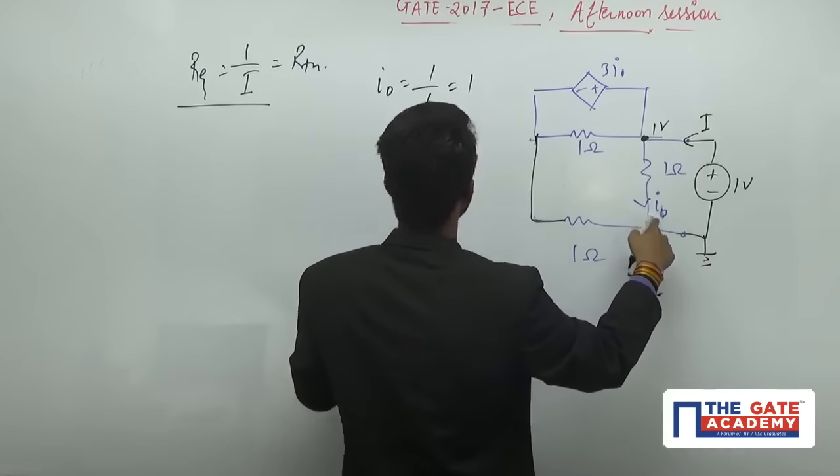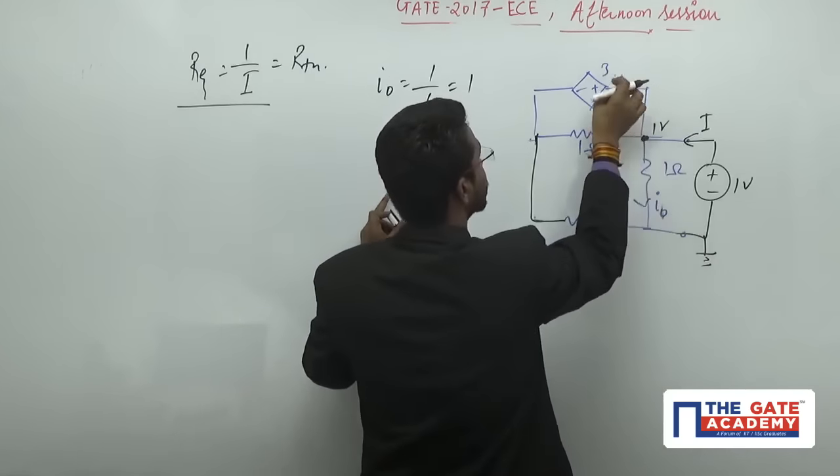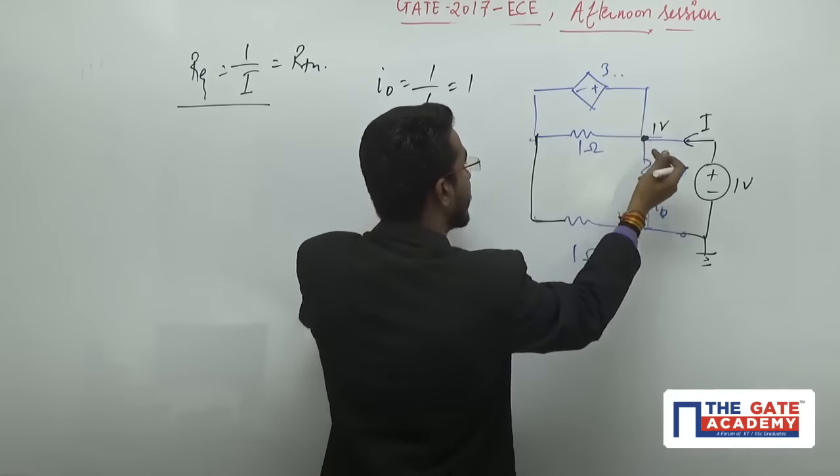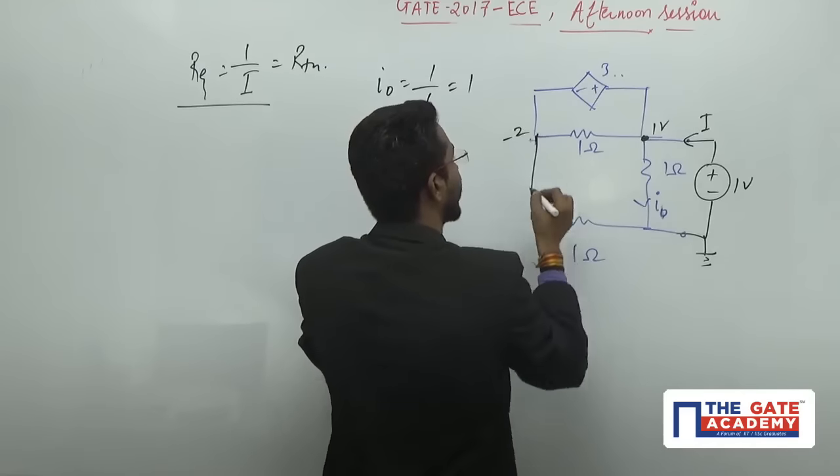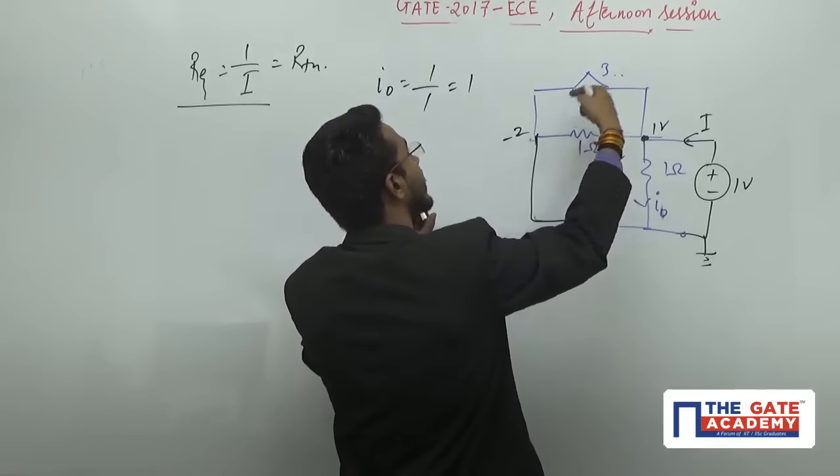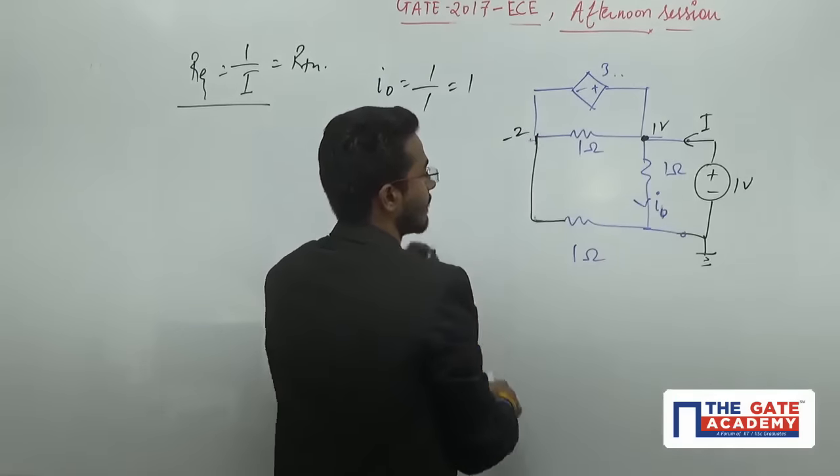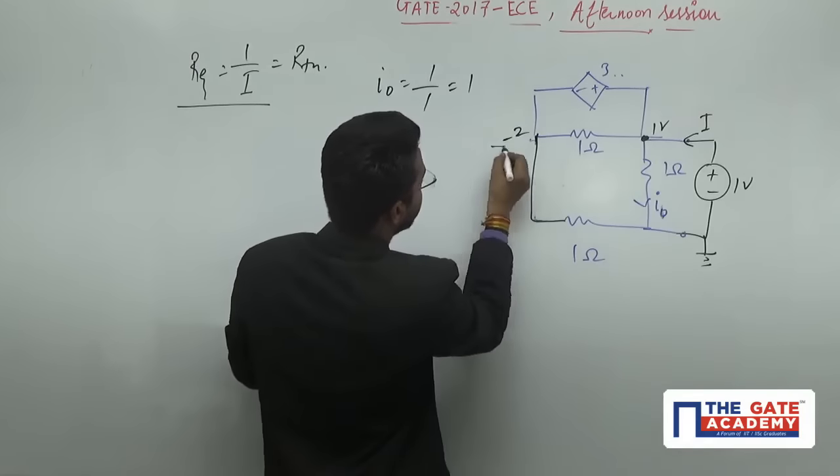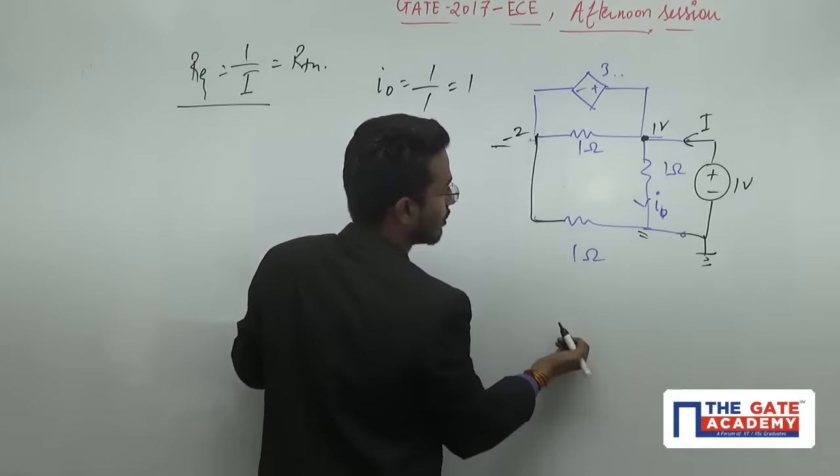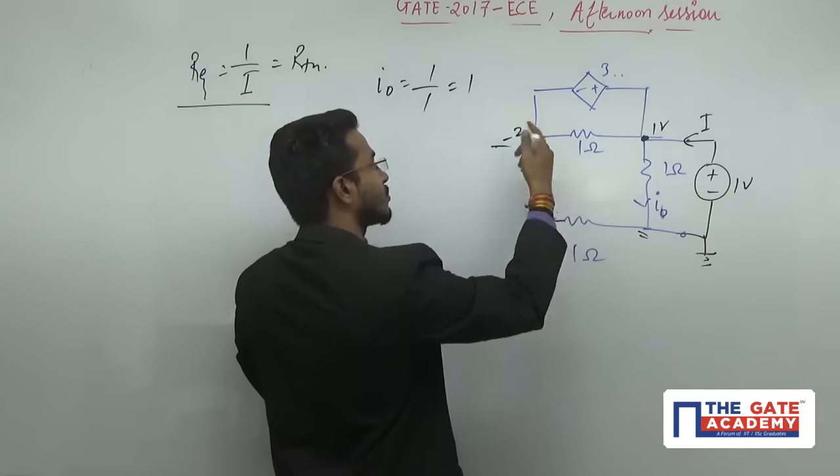If this I naught is one, then this source is three. Here there is a decrement of three, so the voltage will be minus two. From one to a decrement of three gives minus two. Here the value is minus two and here the potential is zero.